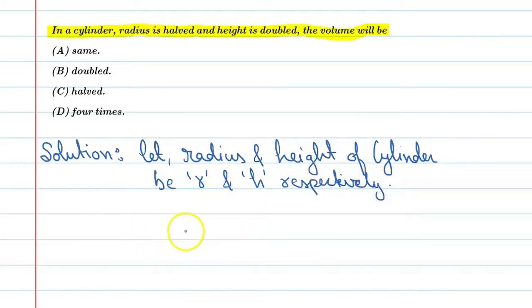Alright, so what will be the volume of cylinder? If we talk about volume of cylinder, we can say volume of cylinder will be equal to π r² h.